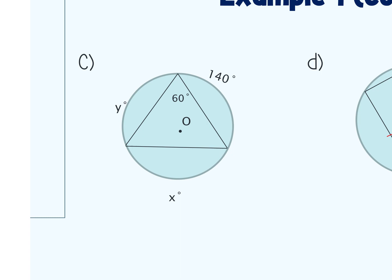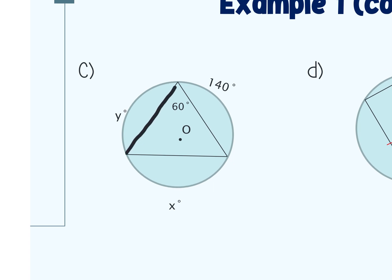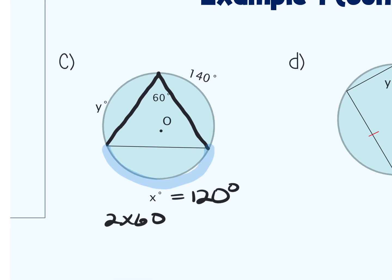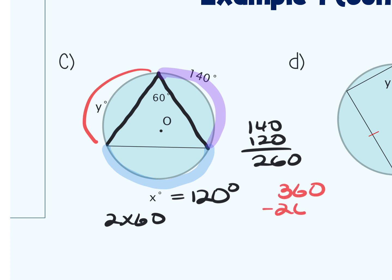For example C, I trace over the 60 degree angle and its intercepted arc. Since the angle is 60, the arc measure is double that — 2 times 60 — so arc x equals 120. To find y, since the circle has a full 360 degrees, I add the two arcs already known: 140 and 120 gives 260. Subtracting from 360, the missing arc y equals 100 degrees.